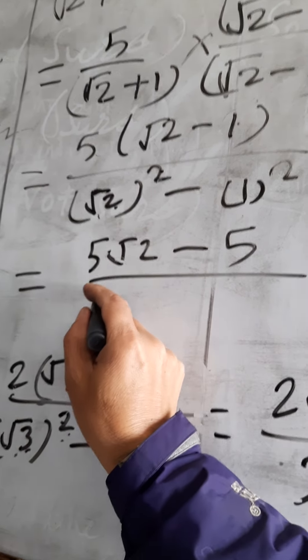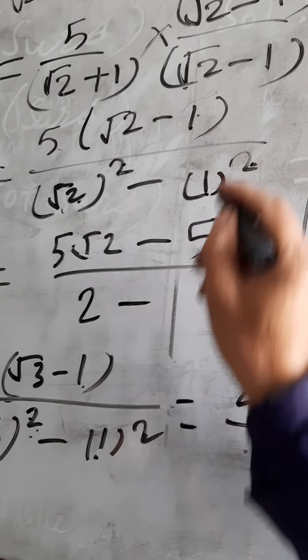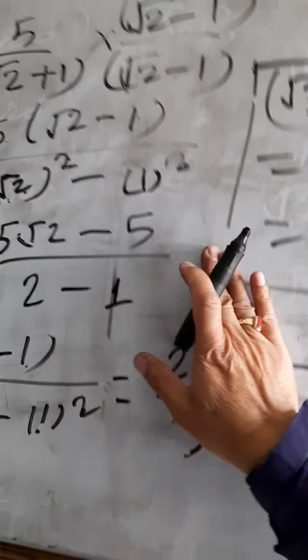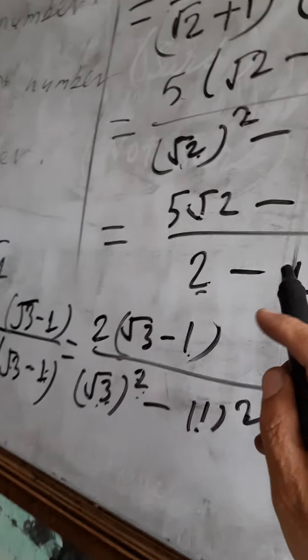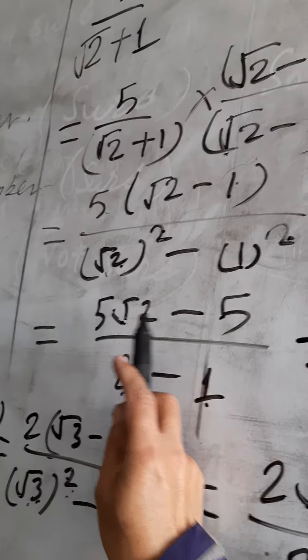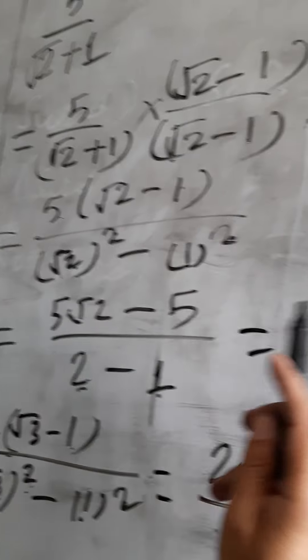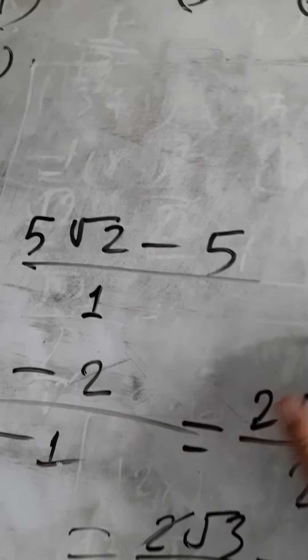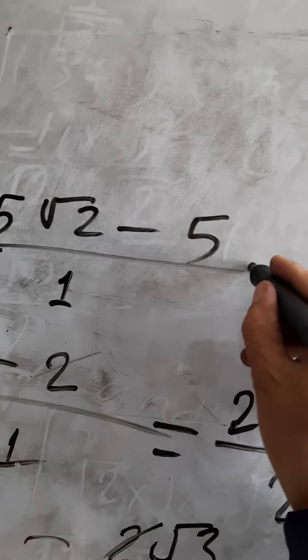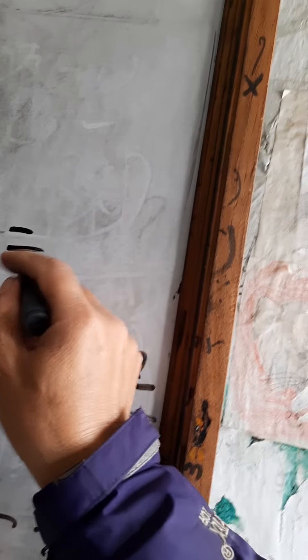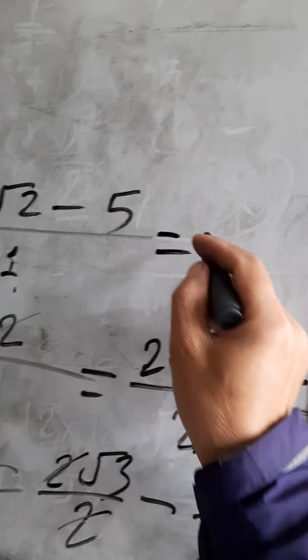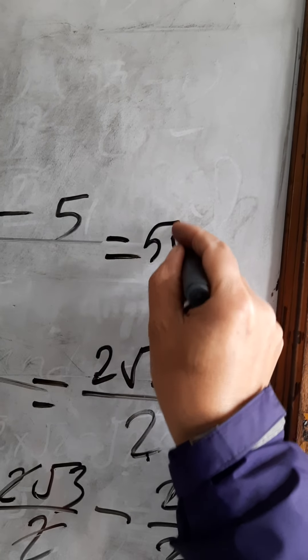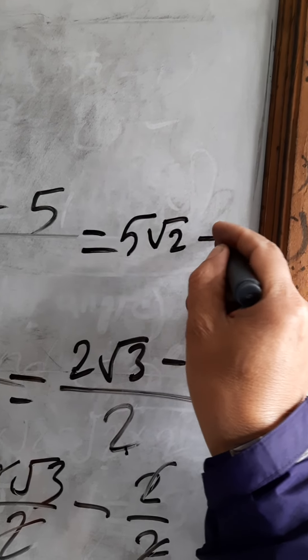This is 2 plus 1. 1 plus 1 is equal to root 2 minus 1. This is 1 plus 1, equal to root 2. This is 5 root 2 minus 5, equal to root 2 minus 1.